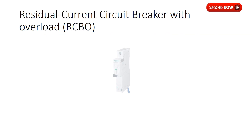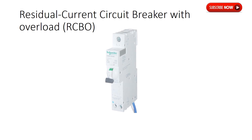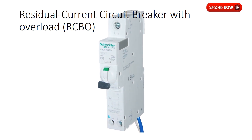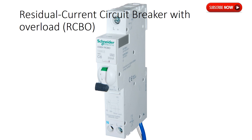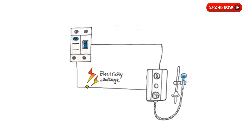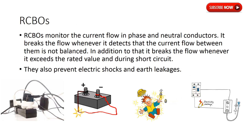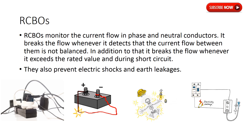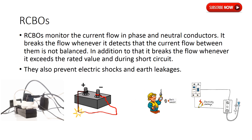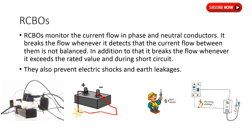RCBOs offer protection against overloads, short circuits, and electric shocks. It is a combination of MCBs and RCCBs. In addition to that, RCBOs can also protect from earth leakages and residual currents. RCBOs monitor the current flow in phase and neutral conductors. It breaks the flow whenever it detects that the current flow between them is not balanced, whenever it exceeds the rated value, and during short circuit. They also prevent electric shocks and earth leakages.